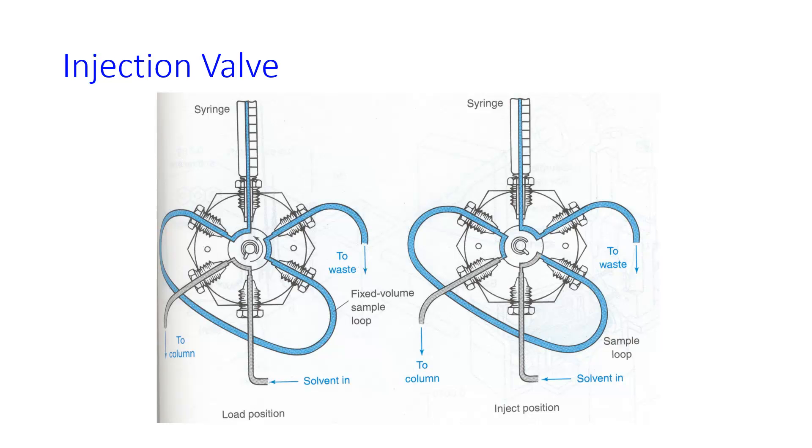When you turn the valve to the inject position, now the pump flow is not bypassing the sample loop anymore. It's connected directly to the sample loop. And so the pump will push solvent onto your column. And it will push exactly the volume of the injection loop. No matter how much you injected with the syringe, it's going to put in that 10 microliters or 100 microliters or whatever the volume of your sample loop is.